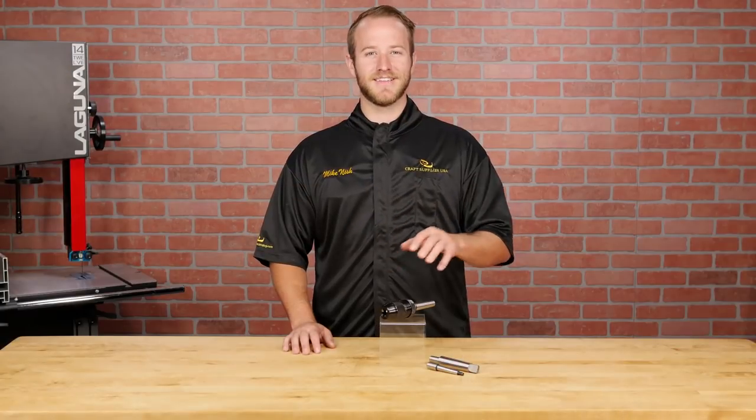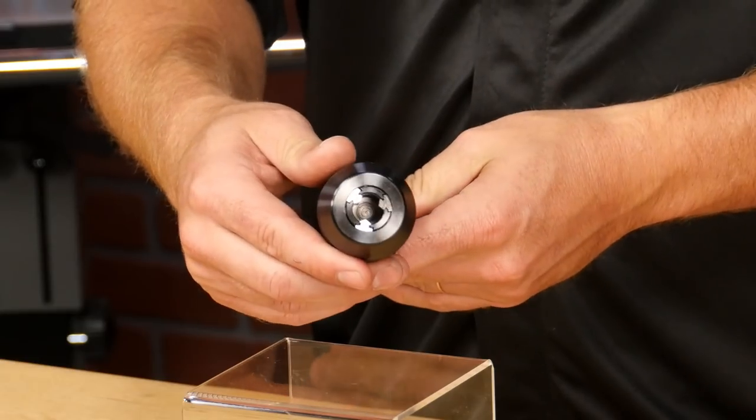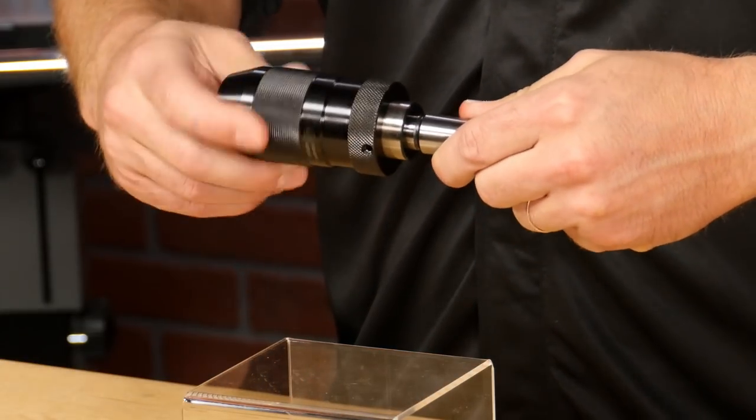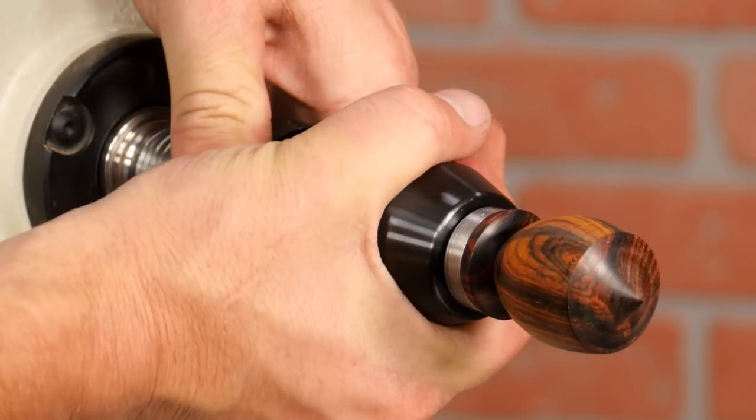Now on to the keyless drill chuck. It's also offered in multiple morse taper sizes and has a half-inch diameter capacity, but this bad boy doesn't require a key to tighten. Just give it some torque from your hands and you're good to go.